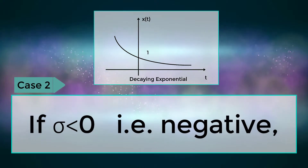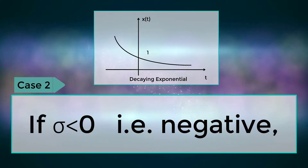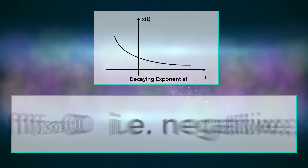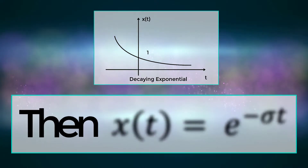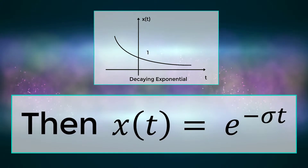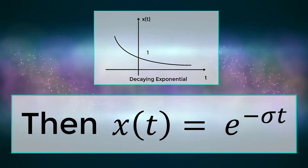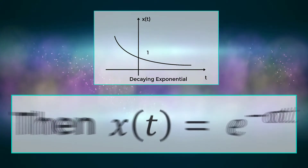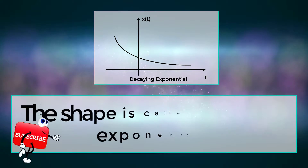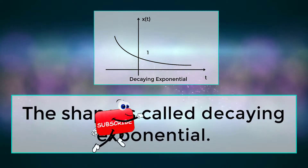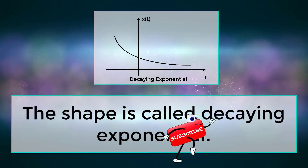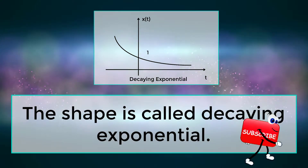Case 2: If sigma is less than 0, then x(t) = e^(−σt). The shape is called a decaying exponential.